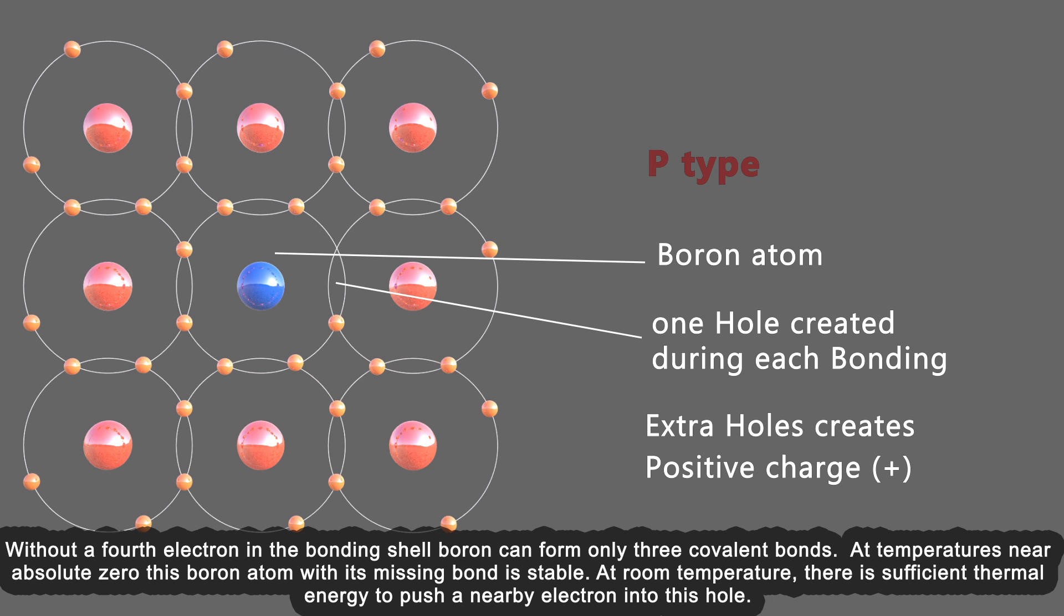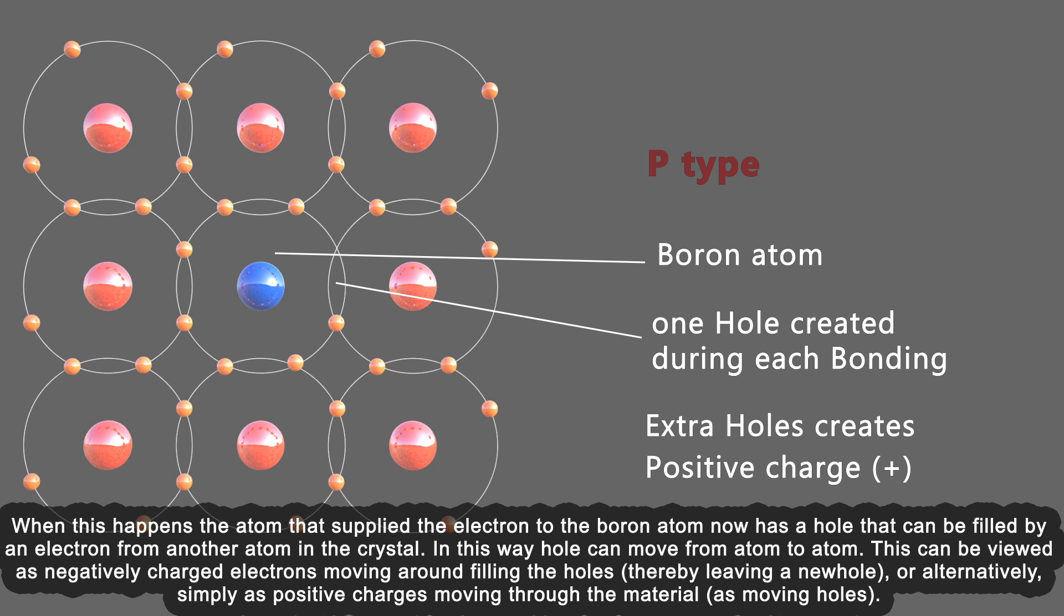At room temperature, there is sufficient thermal energy to push a nearby electron into this hole. When this happens, the atom that supplied the electron to the boron atom now has a hole that can be filled by an electron from another atom in the crystal. In this way, holes can move from atom to atom. This can be viewed as negatively charged electrons moving around filling the holes, thereby leaving a new hole, or alternatively simply as positive charges moving through the material as moving holes.